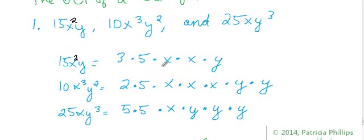The second one is 10x³y², and we're going to factor that out as 2 times 5 times x times x times x times y times y.